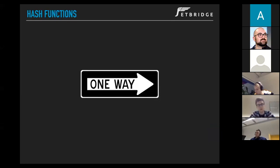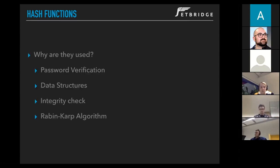Let's move on to hash functions. Hash functions are so-called one-way functions, meaning it is easy to compute the value for a given argument, but it is infeasible to compute the argument from a given value. An important property is that a given hash function always returns a value of a certain fixed length. We use hash functions for: password verification — so we don't need to know the password to verify it; data structures like hash maps and hash tables; integrity checks to verify a program or piece of software wasn't changed on its way to the user; and algorithms like the Rabin-Karp string searching algorithm, which uses hashing to find patterns in strings.